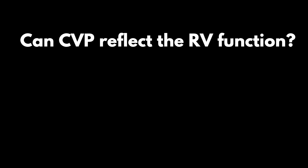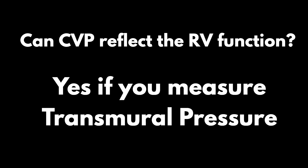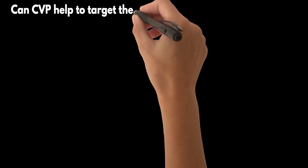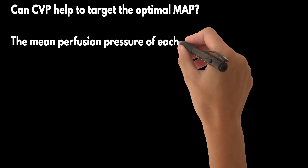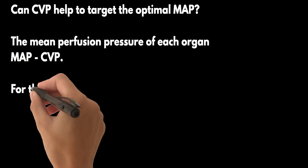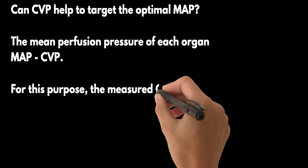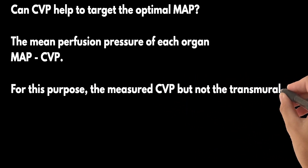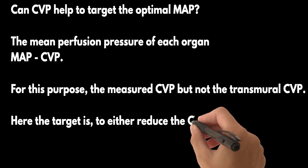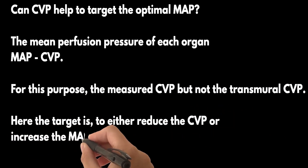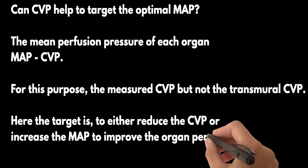Can CVP reflect the RV function? Yes, we can know the RV function provided the transmural value is taken into account. Can CVP help to target the optimal MAP? The mean perfusion pressure of each organ is the difference between mean arterial pressure and CVP. For this purpose, the measured CVP — not the transmural CVP — must be considered. The target is to either reduce the CVP or increase the MAP to improve organ perfusion.